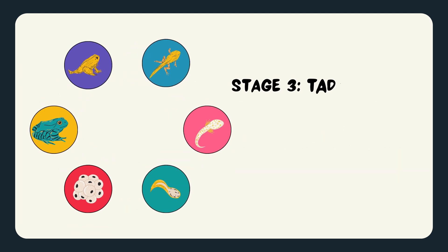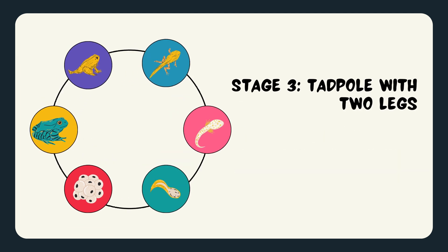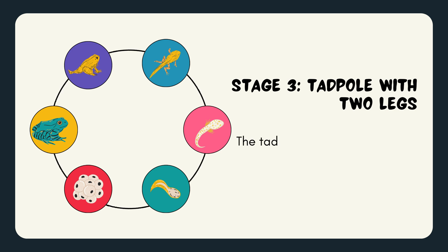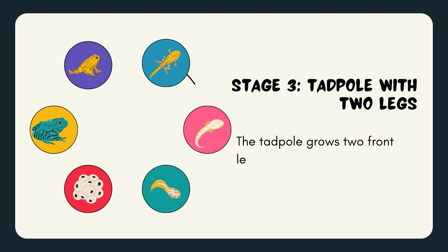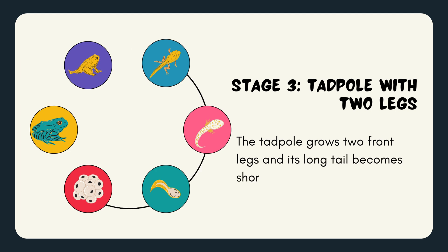Stage 3: Tadpole with two legs. The tadpole grows two front legs and its long tail becomes shorter and shorter.